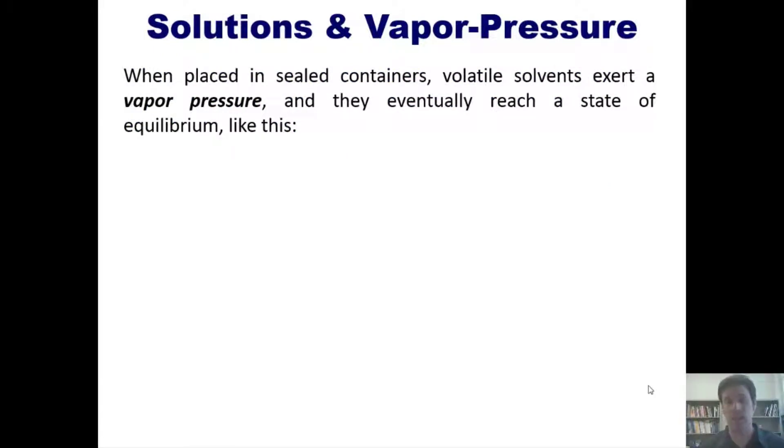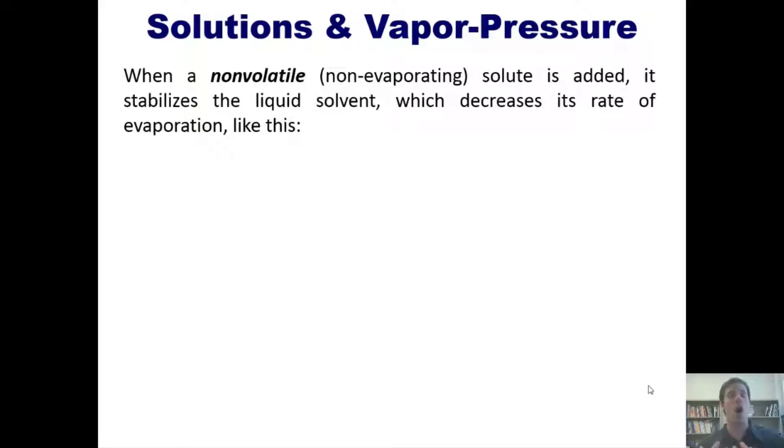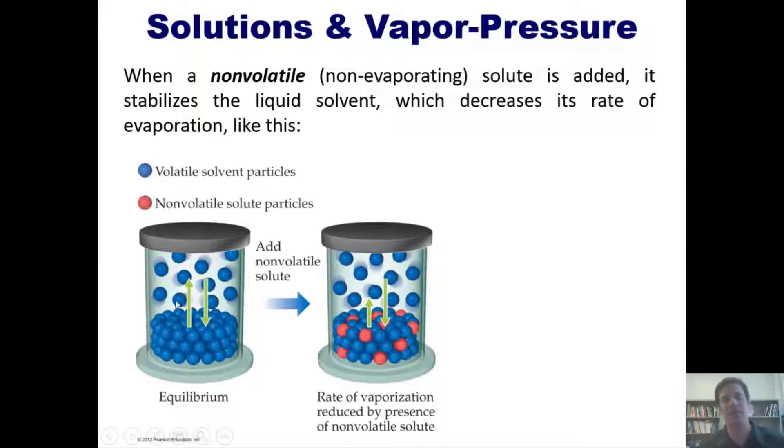When placed in sealed containers like this one, volatile solvents exert a vapor pressure and eventually reach a state of equilibrium. When a non-volatile solute is added, it stabilizes the liquid solvent, which decreases its rate of evaporation. A volatile solvent is one that evaporates easily. If I add a solute to it that is not volatile, it stabilizes or adheres the molecules of that solvent together, which decreases their rate of evaporation. I invite you to pause this and take a closer look at this figure until you have your mind wrapped around this concept.